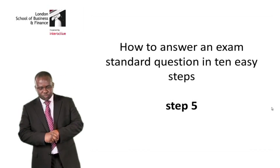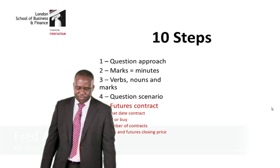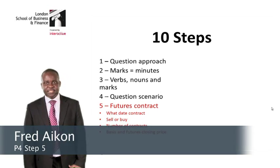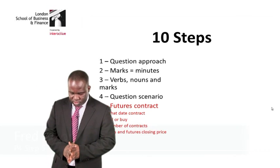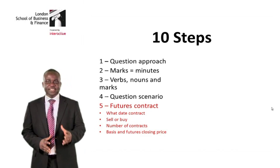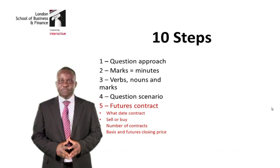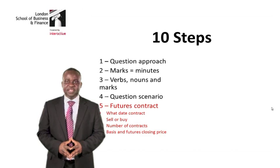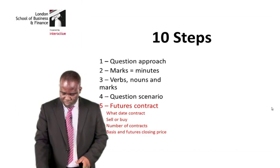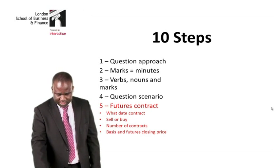Now, let's move on to step 5. With step 5, we're looking at the futures contract. What date contract do we need? Should we sell or should we buy? Number of contracts that we need, basis, and the closing future prices. Then we look at how to get the overall outcome of the futures.